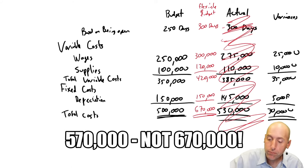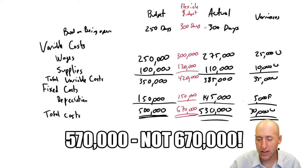So let's compare that flexible budget to the actual to get a flexible variance. 300 versus 275, $25,000 favorable. He had to, he spent $275,000. Given what we know, we would have expected him to spend $300,000. 110 versus 120, this is $10,000 favorable. So we end up at $35,000 favorable.